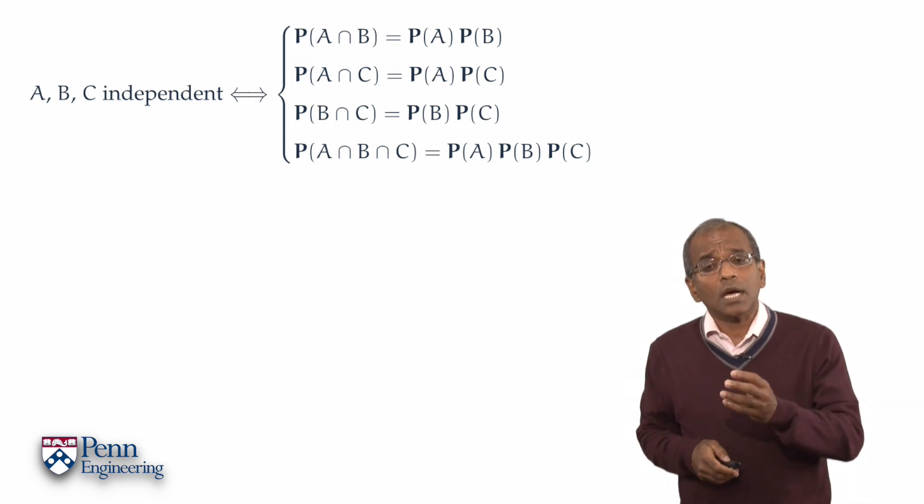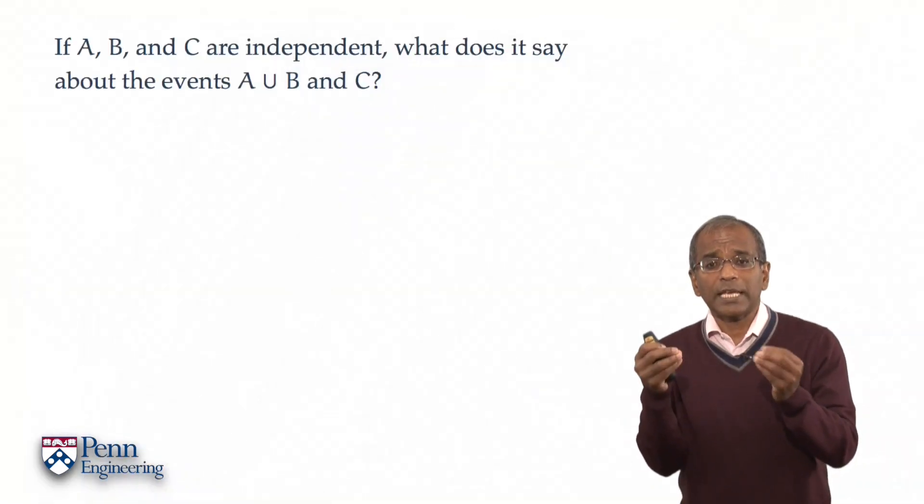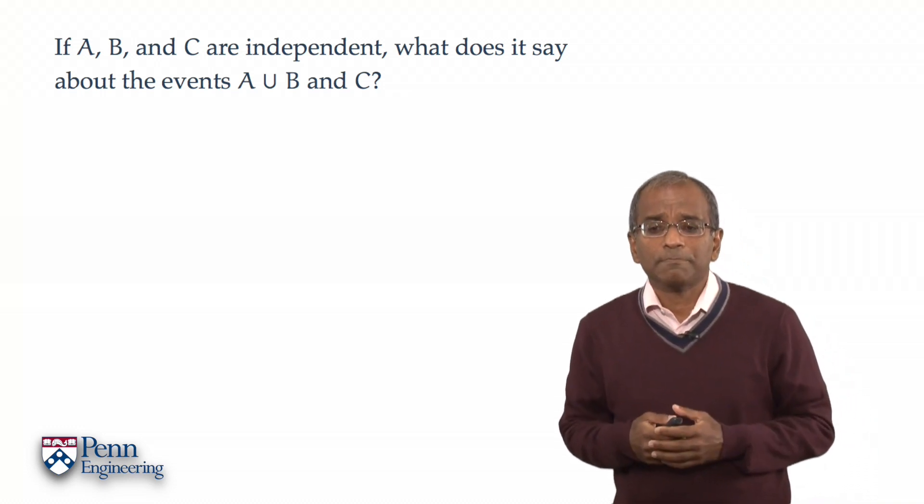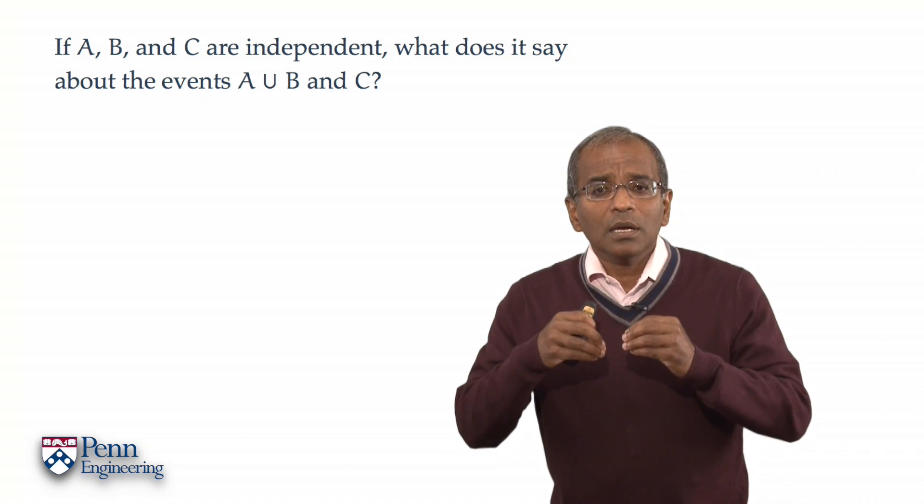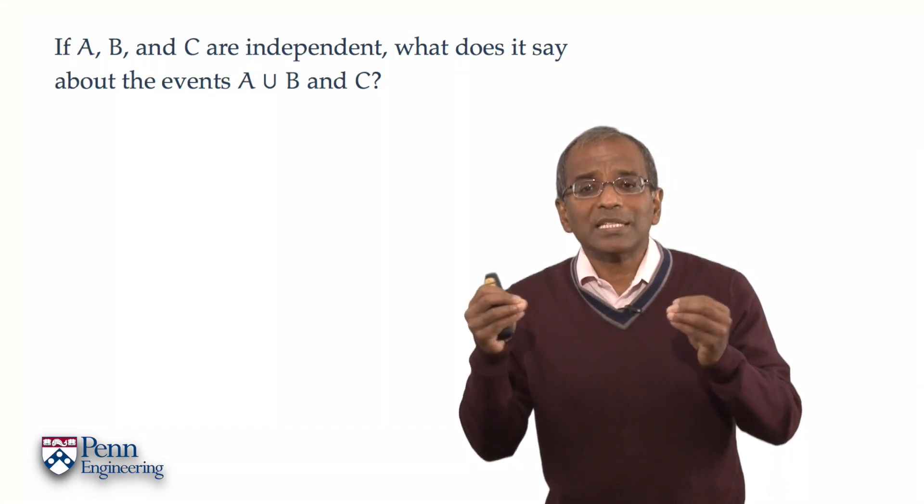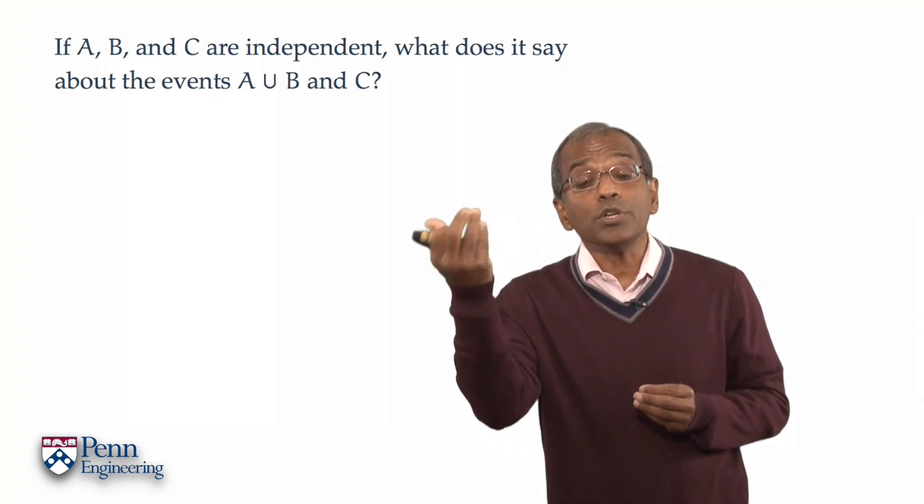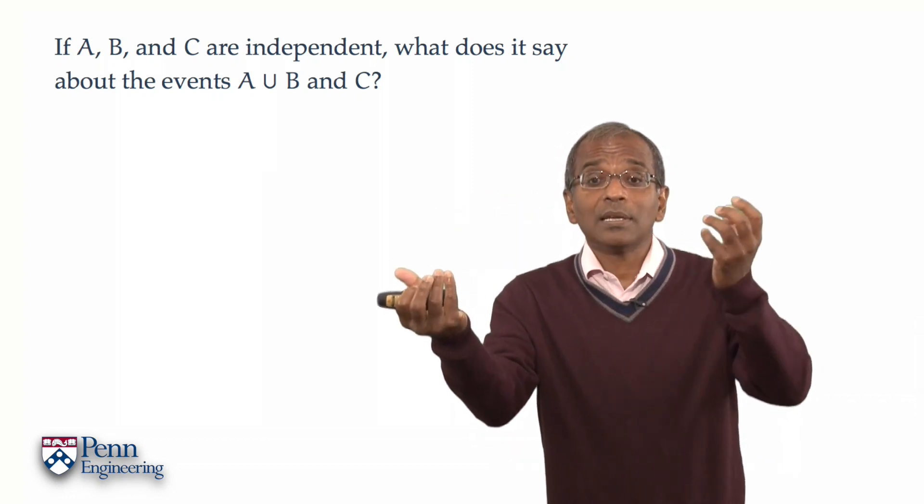Let's try one more problem. And this time, let's start with events A, B, and C, and combine some of them to create a composite event. What does independence of A, B, and C say about a new event, let's say A union B, and an event C?